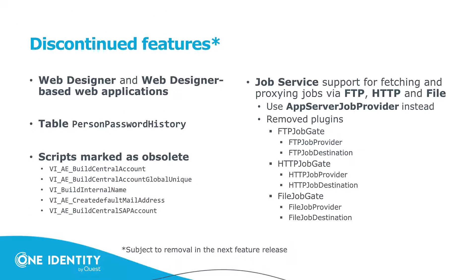Now let's talk about discontinued and deprecated features. Discontinued features are features that will be removed in one of the next Identity Manager versions, typically the next version. Web Designer and Web Designer-based web applications are part of the discontinued features — they are shipped with 9.2 but will be removed in the next feature release. Additionally, the table PersonPasswordHistory will be removed as it is no longer necessary, along with some scripts that are also obsolete.